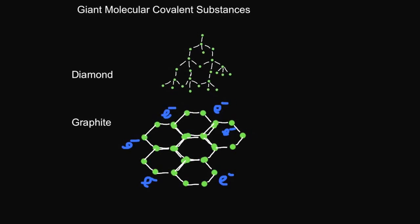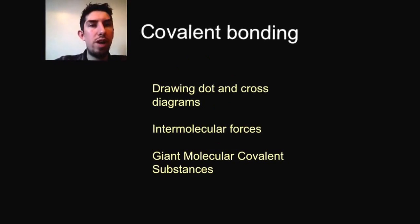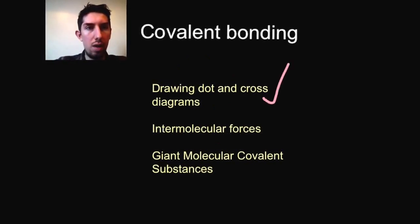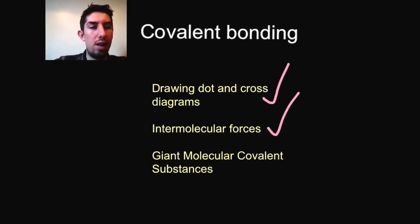Diamond, on the other hand, has no free electrons, so it does not conduct electricity. It is much harder with a much higher melting point due to having more covalent bonds. In summary, make sure you know how to draw those six dot and cross diagrams. Make sure you understand how simple molecular covalent substances have intermolecular forces which hold them together — these are quite weak, which is why they generally exist as gases and liquids. And understand that you have giant molecular covalent substances like diamond and graphite, and make sure you can compare those two.